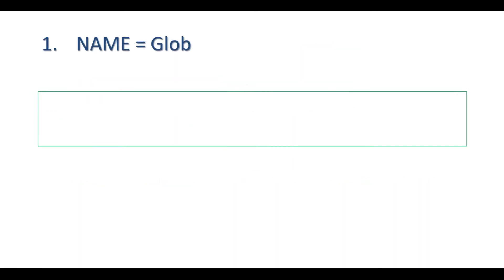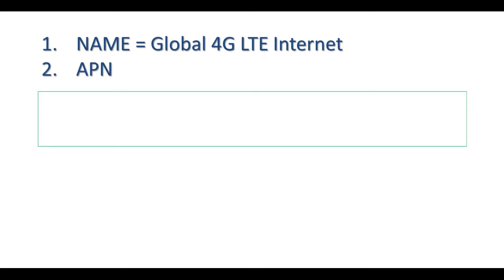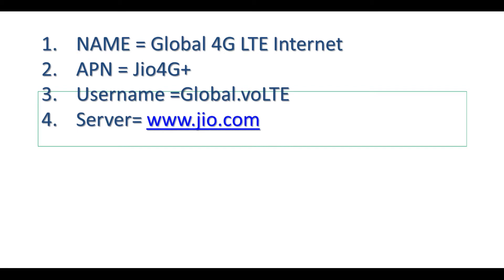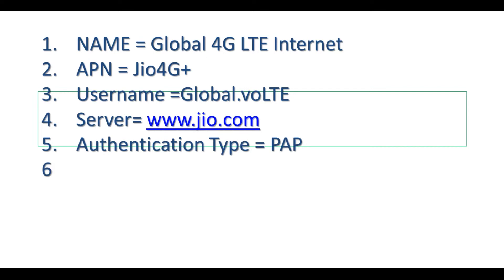1. Name equals Global 4G LTE Internet. 2. APN equals geo4Gplus. 3. Username equals global volt. 4. Server equals www.geo.com. 5. Authentication type equals PAP.